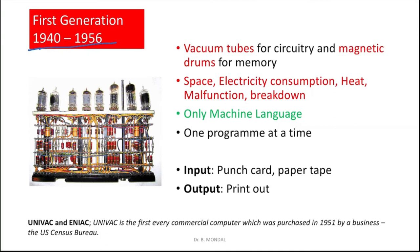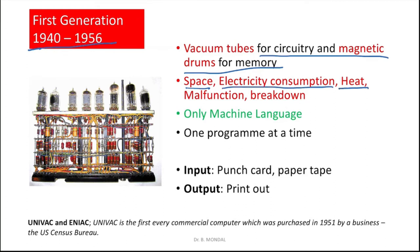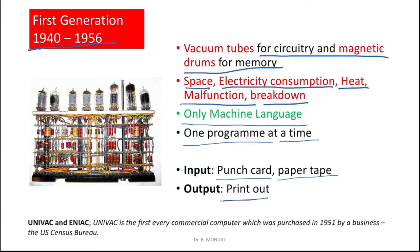First generation computers used vacuum tubes for circuitry and magnetic drum memory. The problems were: huge space was required, high electricity consumption, heat generation, malfunctions, and breakdowns. Only machine-level language was available at that time, one program ran at a time with no multitasking, input was by punch card or paper tape, and output was printout only.